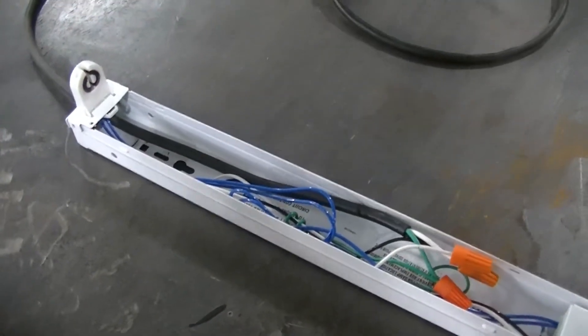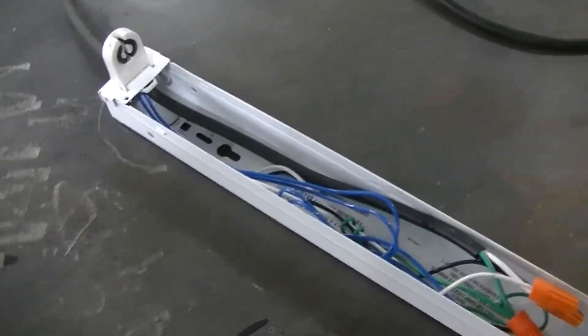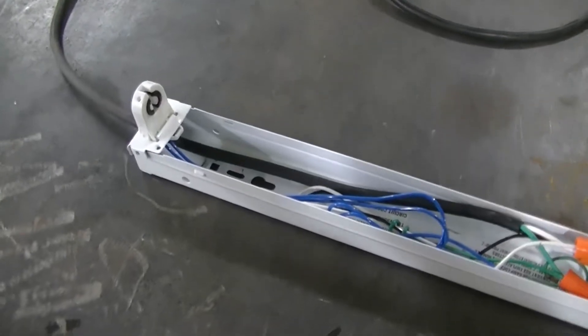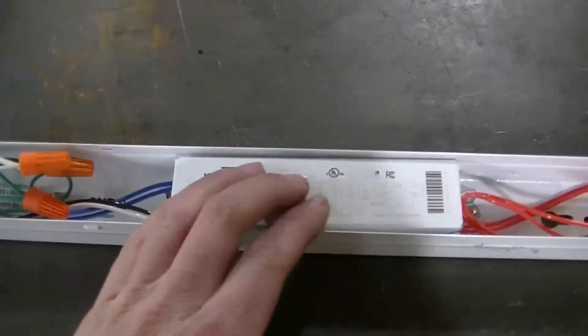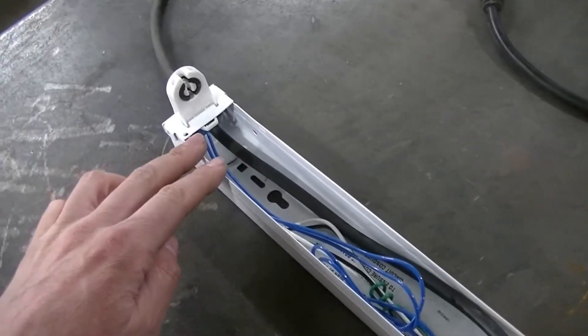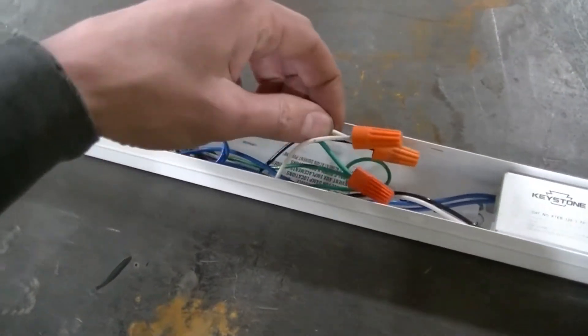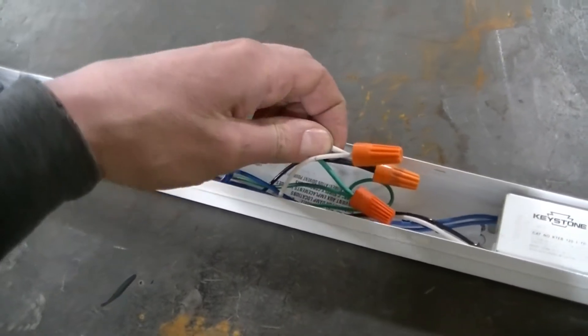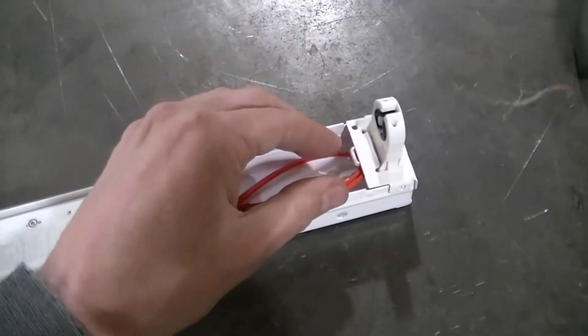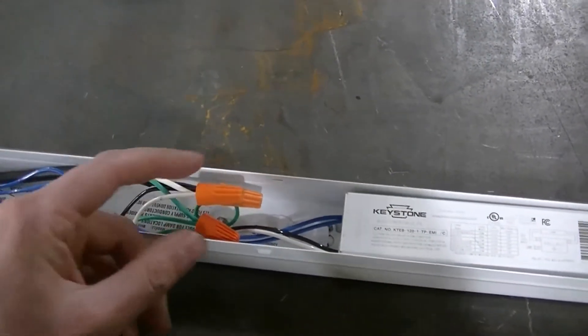But you get instructions with these tubes from Hyper Icon. You can take a look at them and read them over. But it's really simple to convert these. What you're going to do is just cut the ballast out, take this side and connect that to the white wire on your plug, and take the other side and wire it to the black wire on the plug.